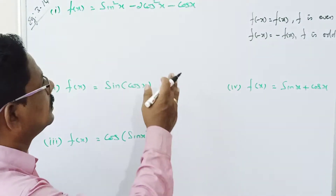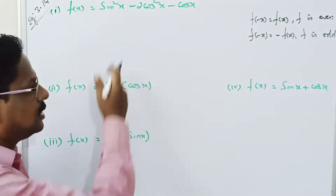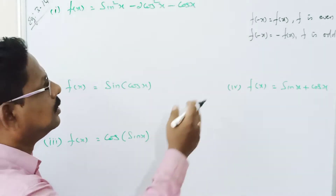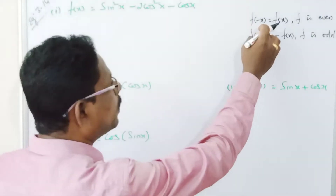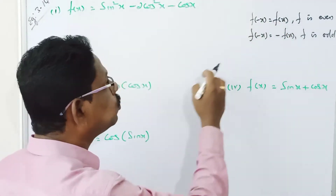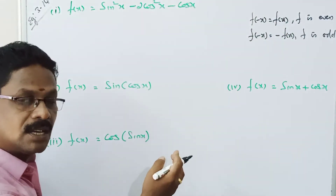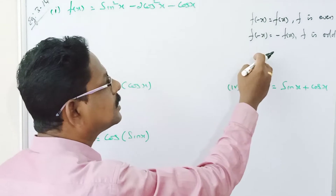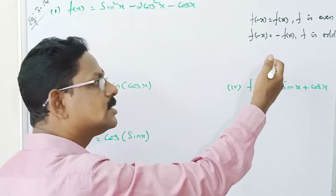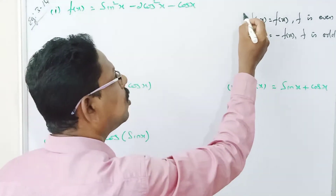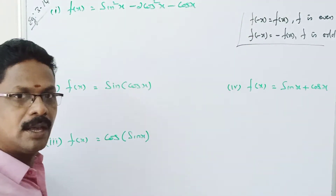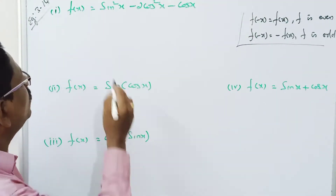Welcome to this lesson. The premise for even and odd functions: f of minus x is equal to f of x means the function is even. f of minus x is equal to minus f of x means the function is odd.